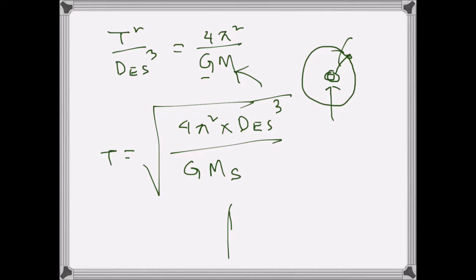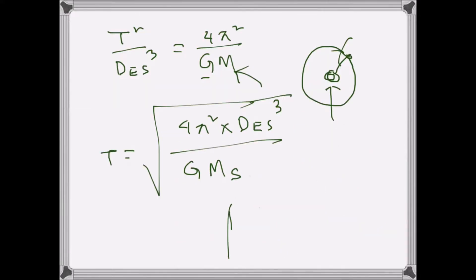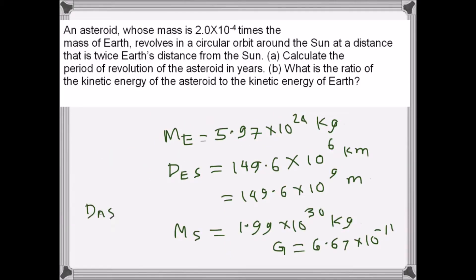There's a small notation clarification: instead of D_ES (Earth-Sun distance), we should write D_AS (asteroid-Sun distance). D_AS equals 2 × D_ES, where D_ES is the distance from the Sun to Earth.